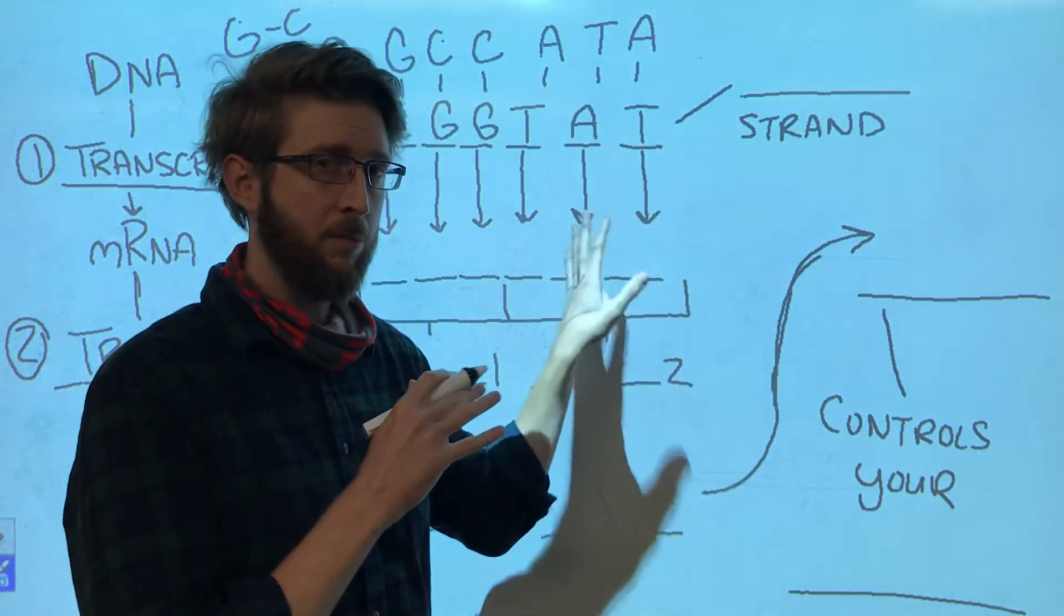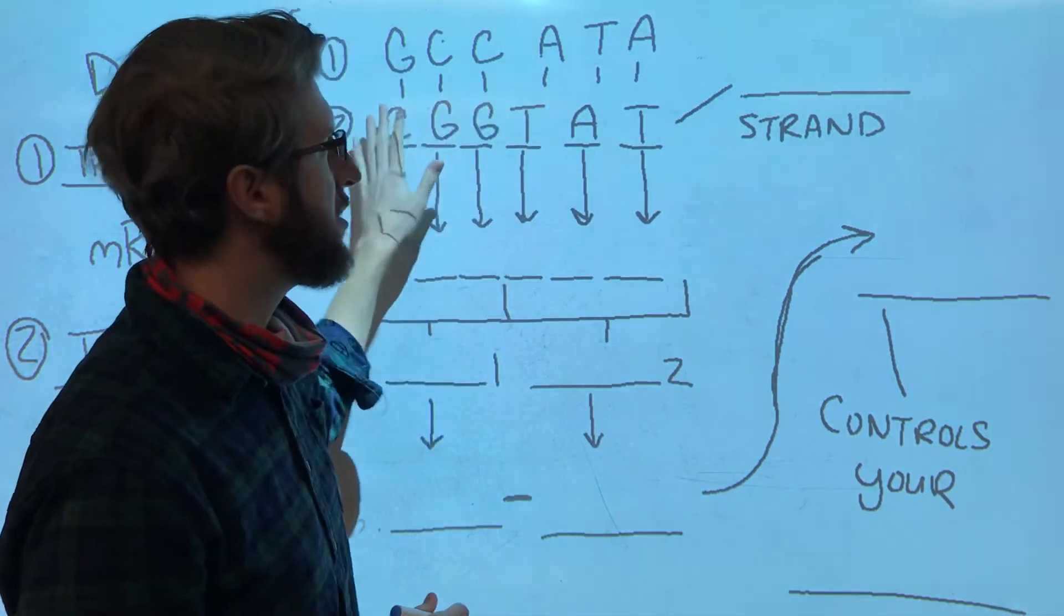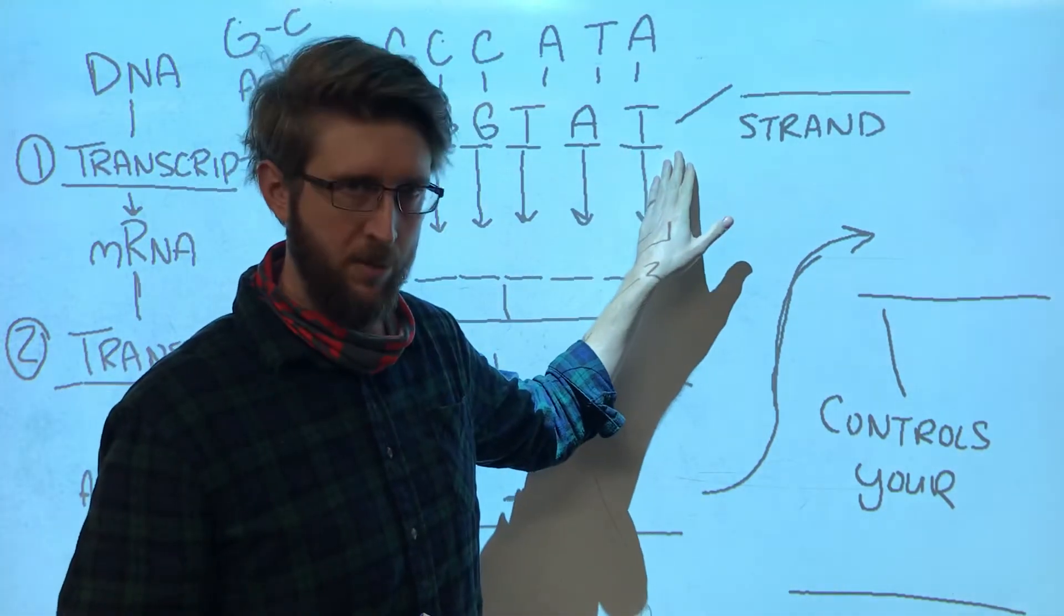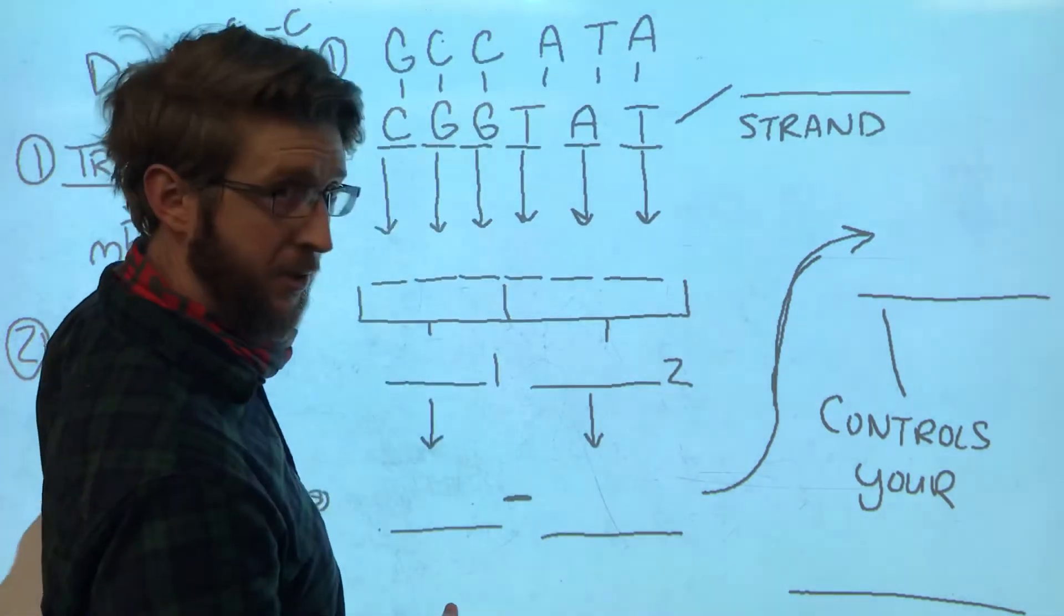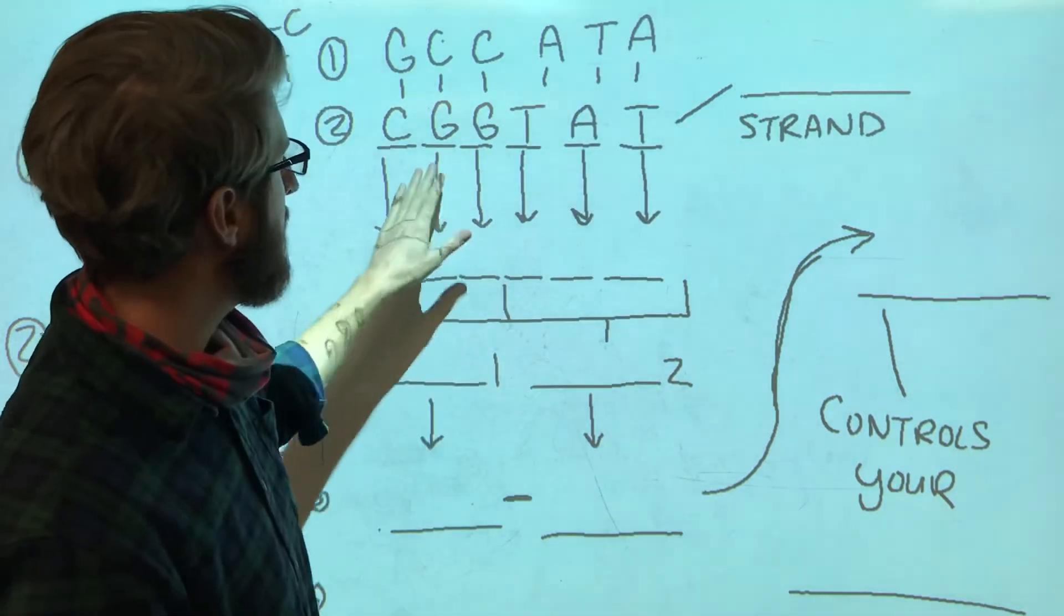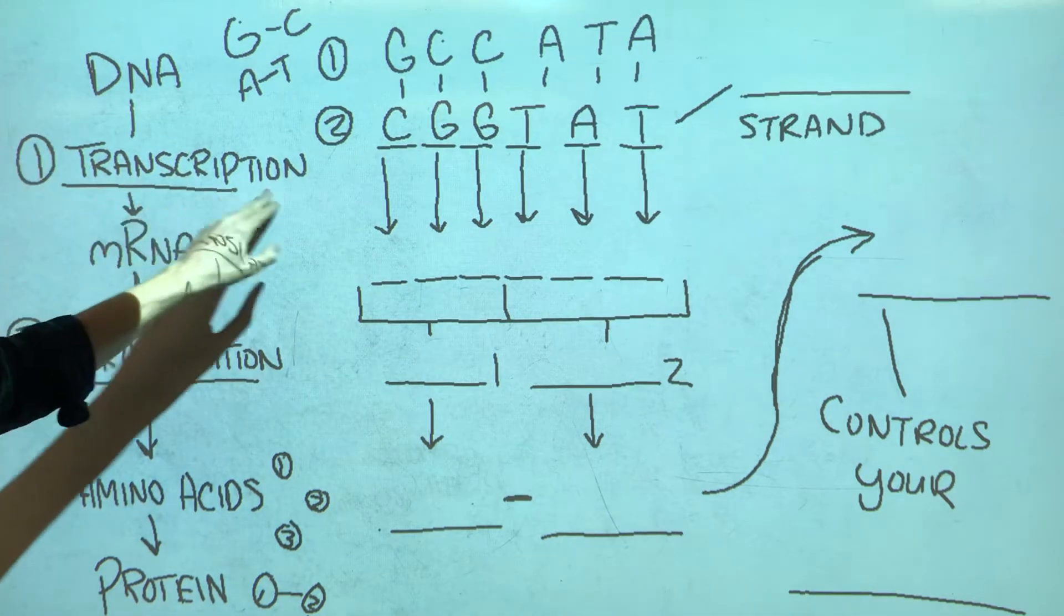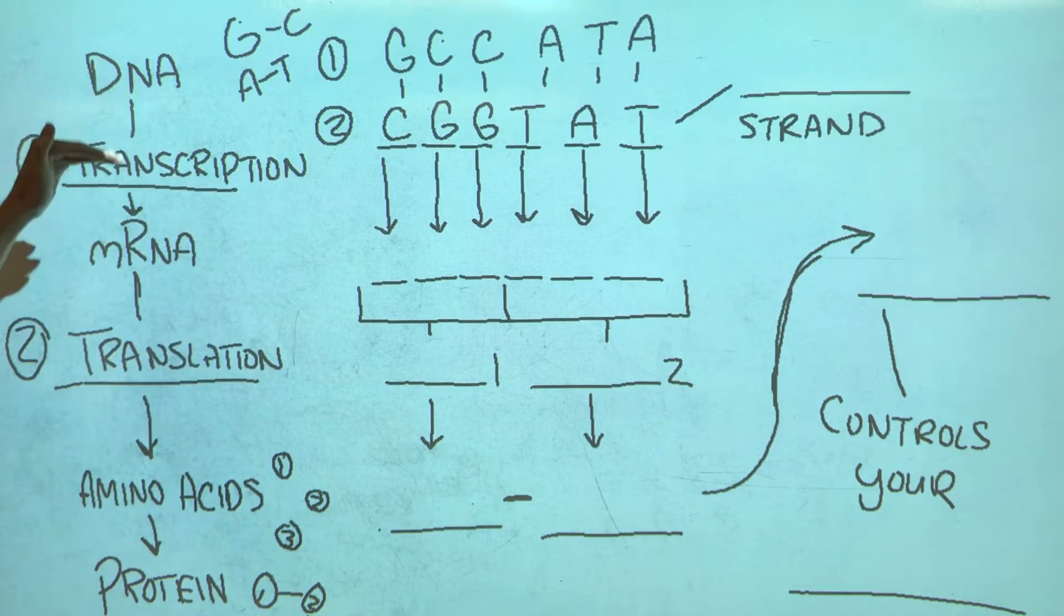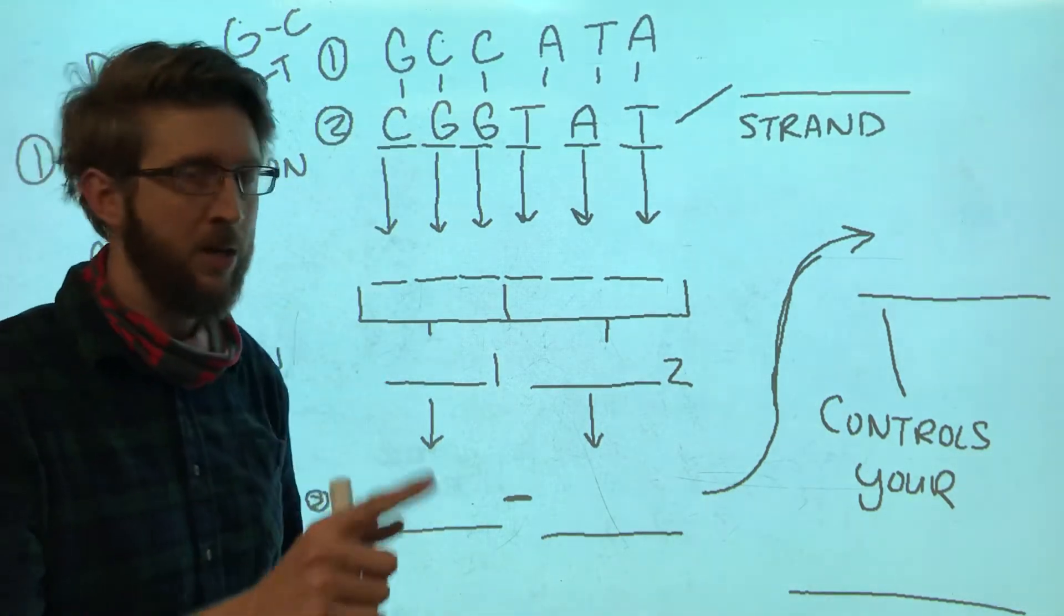Now this was already there. Your body didn't have to make that happen, it's already there. I just wanted to cover the base pairing rules. So now that we have our full DNA molecule, both strands, we're now going to go through the first step of protein synthesis, which is transcription—to convert one of these two strands, only one, not both.